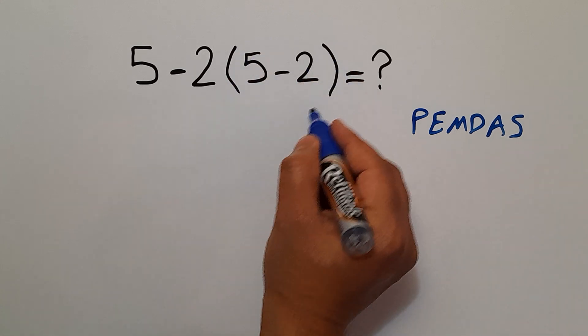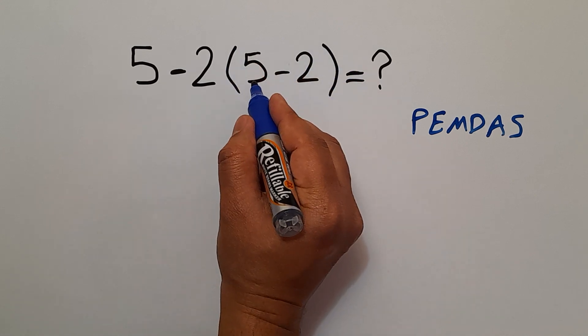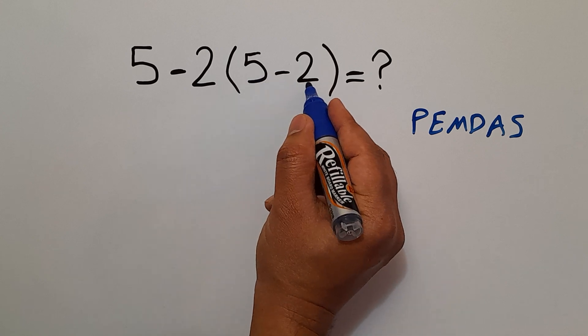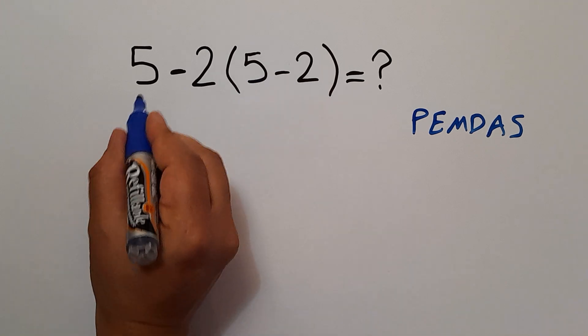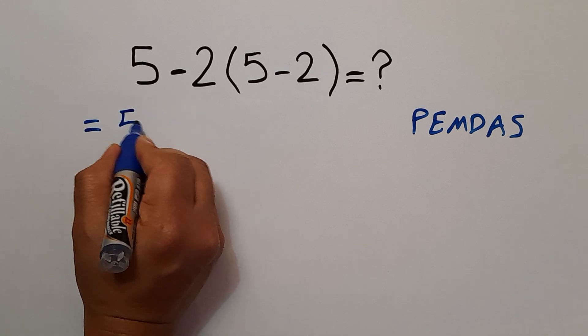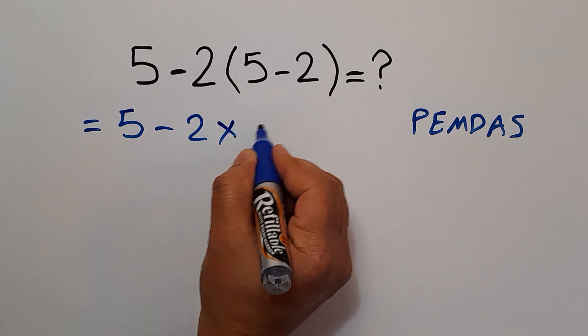Here we have these parentheses, so first we have to do these parentheses. Inside these parentheses we have 5 minus 2 which equals 3. So our expression equals 5 minus 2 times 3.